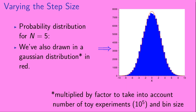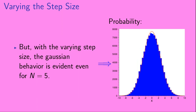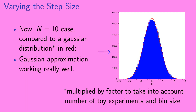Here we show the probability distribution for n equals 5. We've also drawn in a Gaussian distribution in red. Previously, with a constant step size of 1, we couldn't see the Gaussian behavior until we got to large n — for example, n equals 5 doesn't look very Gaussian, while n equals 100 looks nicely Gaussian. However, with the varying step size, the Gaussian behavior is evident even for n equals 5. And here we show the result for n equals 10 compared to a Gaussian distribution in red, and we can see that the Gaussian approximation is working really well.